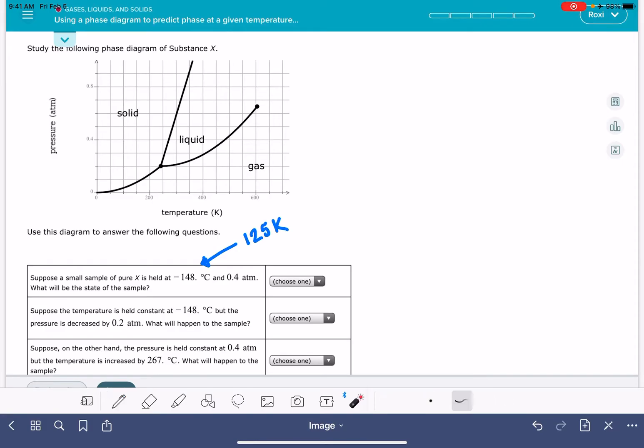So we're at 125 Kelvin and 0.4 atmosphere. What is the state of the sample? We're just going to find that location, that pressure-temperature combination on the graph. Here's our 0.4 atmospheres, and 125 Kelvin is right around here. So this is a pretty good guess about that pressure-temperature combination. This is going to be a pressure-temperature that corresponds to solid state.